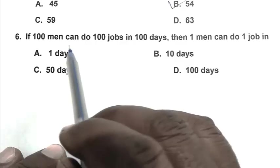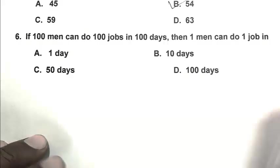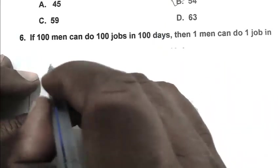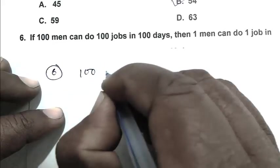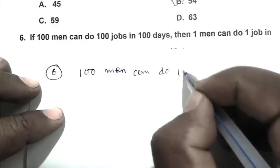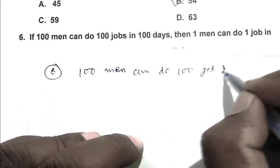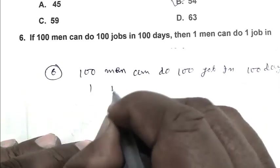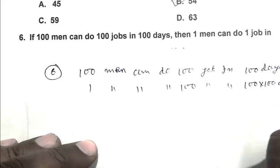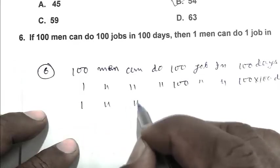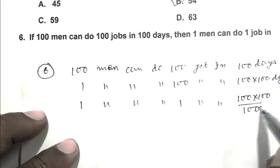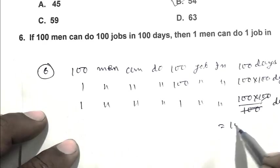Question number 6: If 100 men can do 100 jobs in 100 days, then 1 man can do 1 job in how many days? So friend, we can calculate it using the unitary method. If 100 men can do 100 jobs in 100 days, then 1 man can do 100 jobs in 100 multiplied by 100 days, and 1 man can do 1 job in 100 multiplied by 100 divided by 100. So it becomes 100 days. So friend, the answer is 100 days. So D is the right answer.